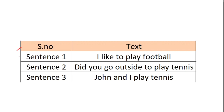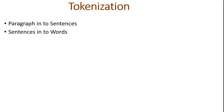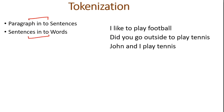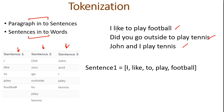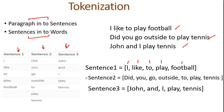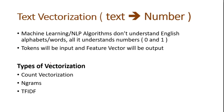Let me take a simple example for better clarity. We have three sentences as our dataset: 'I like to play football', 'Did you go outside to play tennis', and 'John and I play tennis'. This is our raw text. For tokenization, we convert the paragraph into sentences — sentence 1, sentence 2, sentence 3 — and then each sentence into tokens, which is a list of strings in Python. So tokenization is now complete.